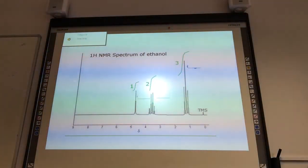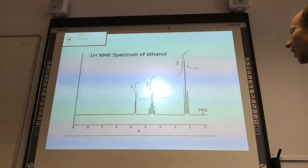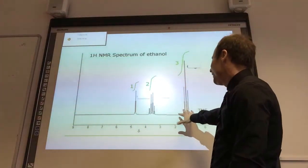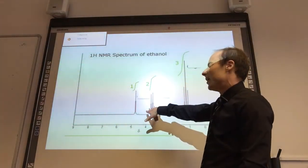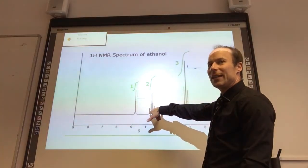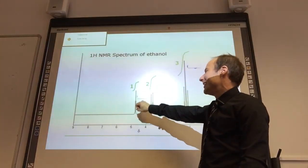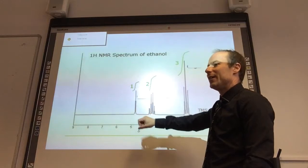So we have here the H-hydrogen NMR spectrum of ethanol. This should be quite easy for us to assign. I've got a lovely triplet there, I've got a quartet there, and I've got a singlet there.